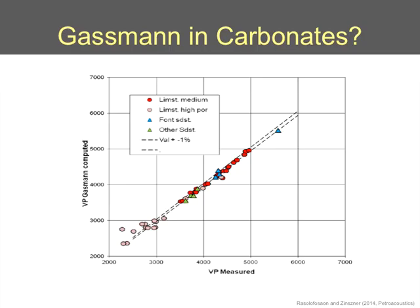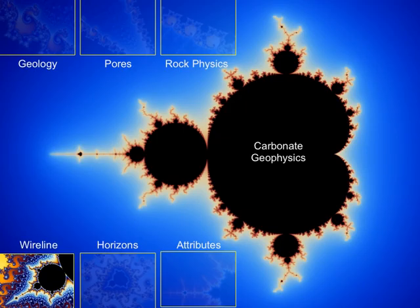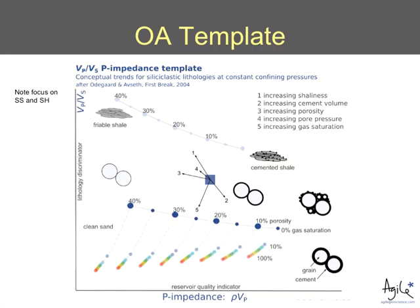One issue is how well Gassmann describes fluid substitution in carbonates. This is taken from a very recent book called Petroacoustics, available online for download. It shows VP measured in laboratory experiments on the horizontal axis versus VP estimated from Gassmann theory on the vertical axis. The red and pink symbols represent carbonates, and it's a very good fit. The general thought now is that Gassmann is at least as accurate as our experimental methods in the lab — the weak link is not Gassmann's theory applied to carbonates.